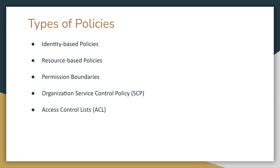Next, we have access control lists, or ACLs. ACLs are cross-account permission policies that grant permissions to the specified principal. ACLs cannot grant permissions to entities within the same account. They are the only policy type that does not use the JSON policy document structure. Finally, we have session policies. Session policies limit the permissions that the role or user's identity-based policies grant to a session, and they limit permissions for the duration of the session but do not grant permissions.